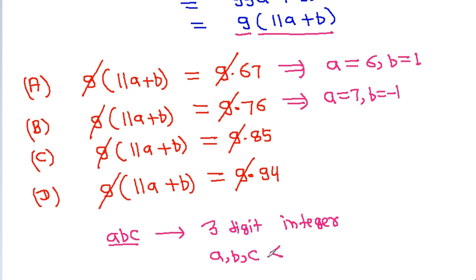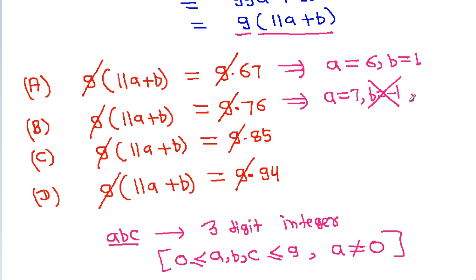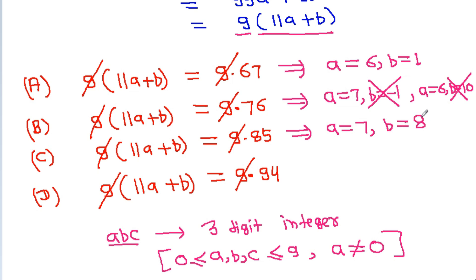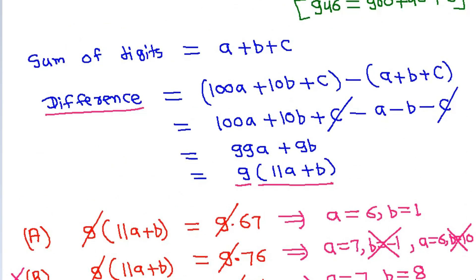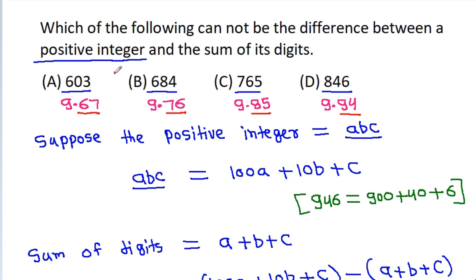Now a, b, c must each be between 0 and 9, and a cannot be 0. For option B, 11a plus b equals 76: if a is 6 then b equals 10, which is not allowed since b cannot equal 10. If a is 7 then b equals negative 1, which is also not allowed. So option B is not possible, therefore option B is the correct answer.